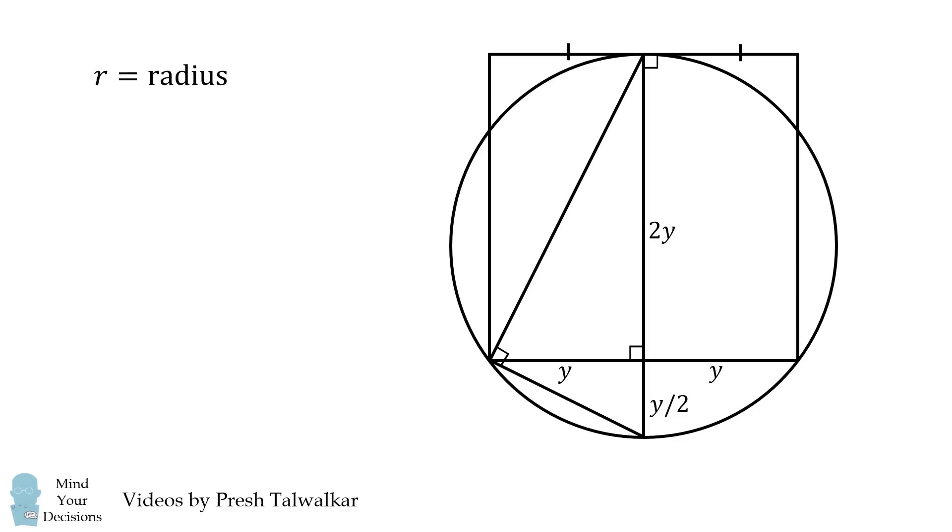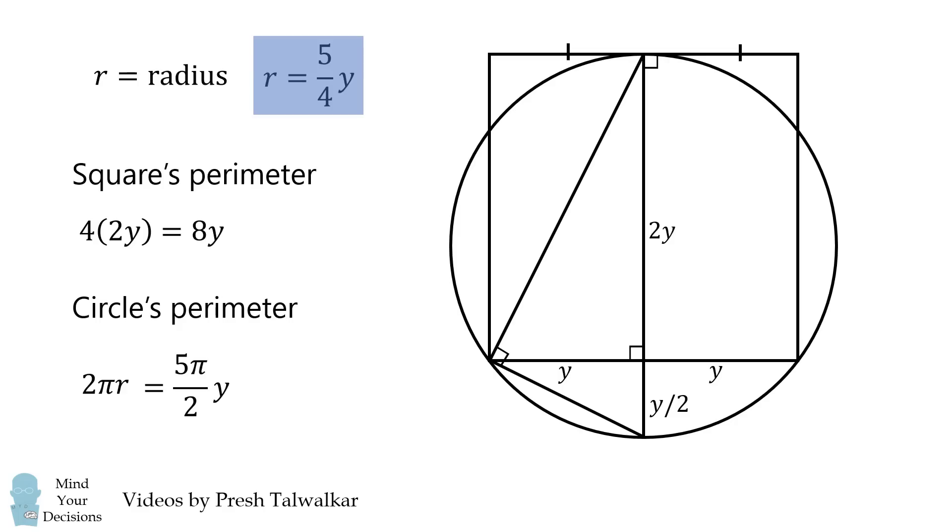We now have r as the radius, which means that 2r is equal to 2y plus y over 2. We then have r is equal to 5 over 4y. Which means just as before we calculate the square's perimeter and the circle's perimeter, and we're going to get that the square's perimeter is larger.